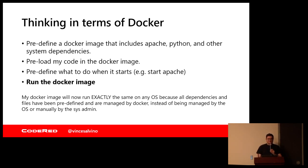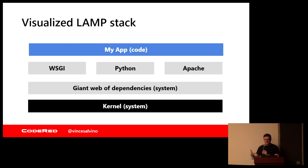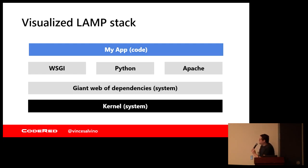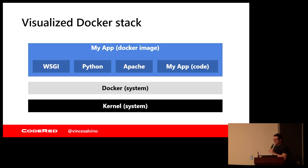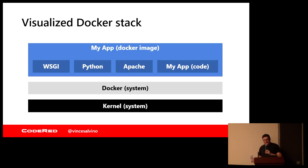Let's visualize the LAMP stack. If this is an OS, you'd have the kernel, you'd have a bunch of system dependencies, you'd have the apps that you want to install — installed from apt-get or yum or whatever your system package manager is — and then you'd have your code. With Docker, it's a little bit different. You're still on the kernel and you still have Docker as a system dependency. But you're shipping an entire image of what your app needs — that might include WSGI, Python, Apache — it would certainly include your own app code. You're shipping an entire frozen state of everything.